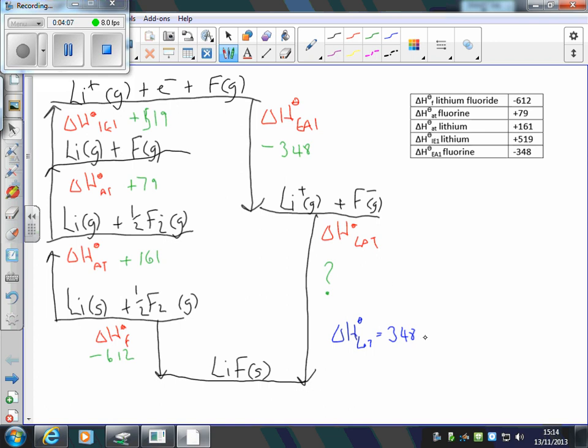I'm going against this arrow, so it's minus 519. Against this next arrow, so minus 79. Against this arrow, so minus 161. And I'm going with this arrow, so it's minus 612.